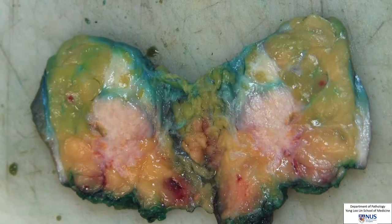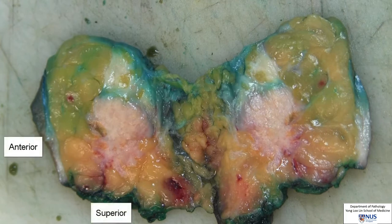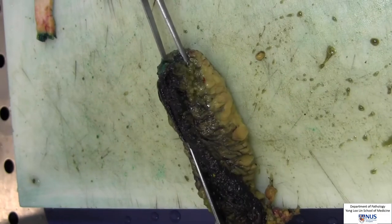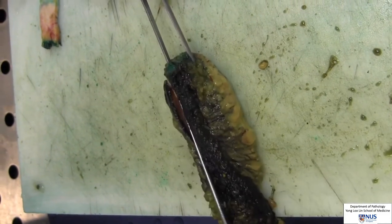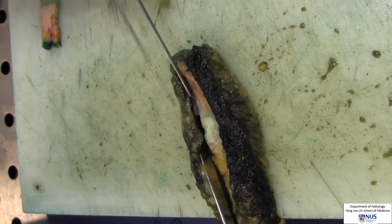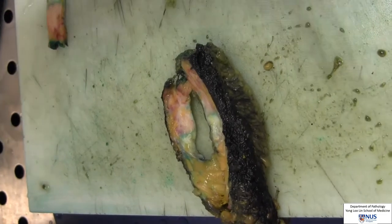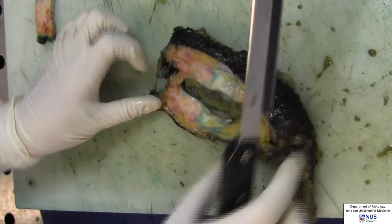We will examine the slice of breast with the tumour closest to the margins. To orientate, the anterior margin is covered by skin, the superior margin is inked green, and the inferior margin is inked yellow. We will take sections of the tumour with adjacent normal breast tissue at the superior and posterior margins. This is an example of how the tumour will be sampled with the posterior margin, and the same process will be repeated for the superior margin.